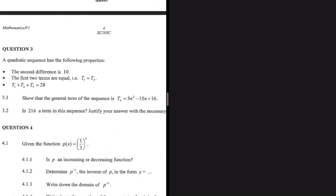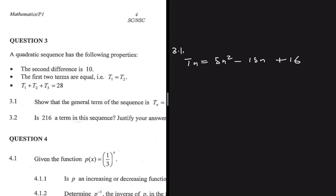The question says that a quadratic sequence has the following properties: the second difference is 10, the first two terms are equal to each other — that is t1 equals t2 — and then t1 plus t2 plus t3 equals 28. Question 3.1 asks us to show that the general term of the sequence is tn equals 5n squared minus 15n plus 16.